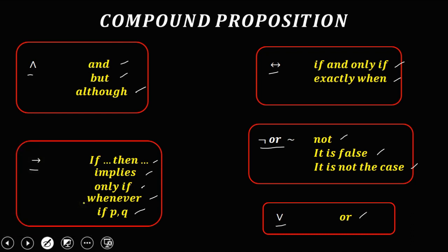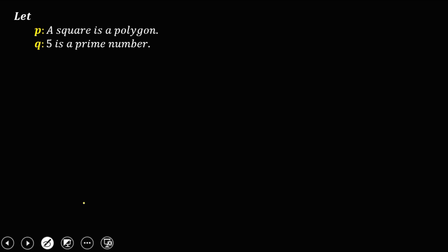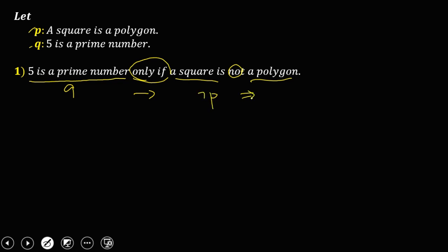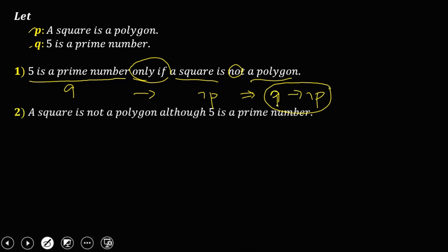Given: let p be 'a square is a polygon' and q be '5 is a prime number.' For the first compound statement, we need to convert it to symbolic form. 'Five is a prime number only if a square is not a polygon' — 'five is a prime number' is q, 'only if' means arrow (→), and 'a square is not a polygon' is ¬p. So the symbolic form is q → ¬p.